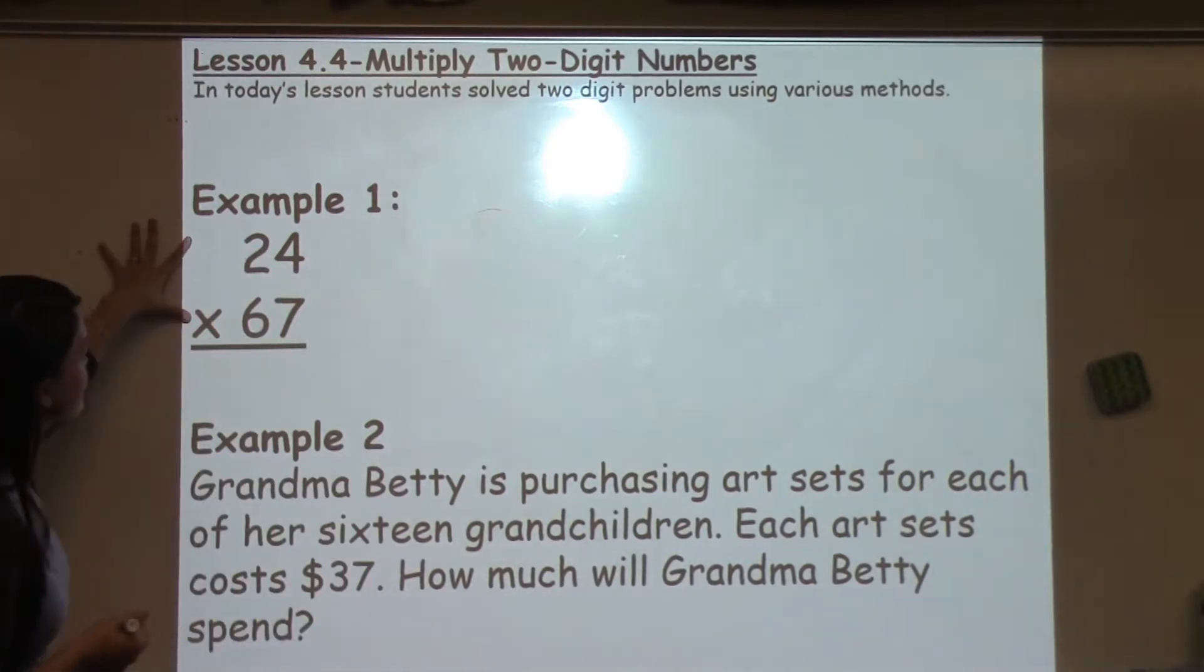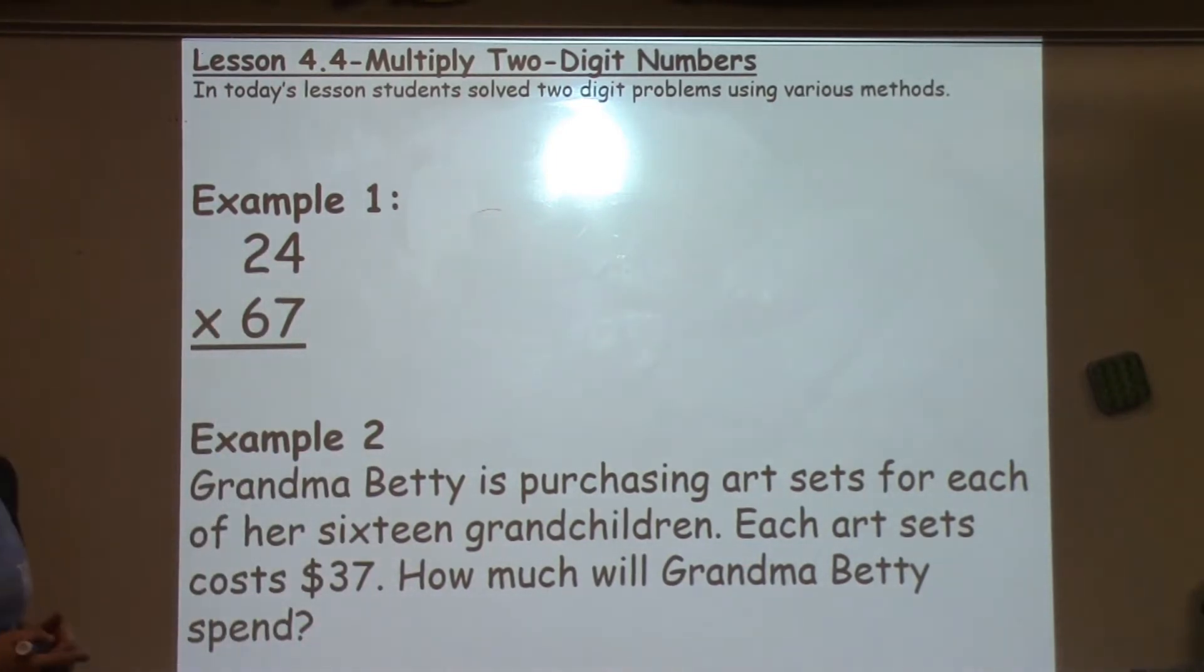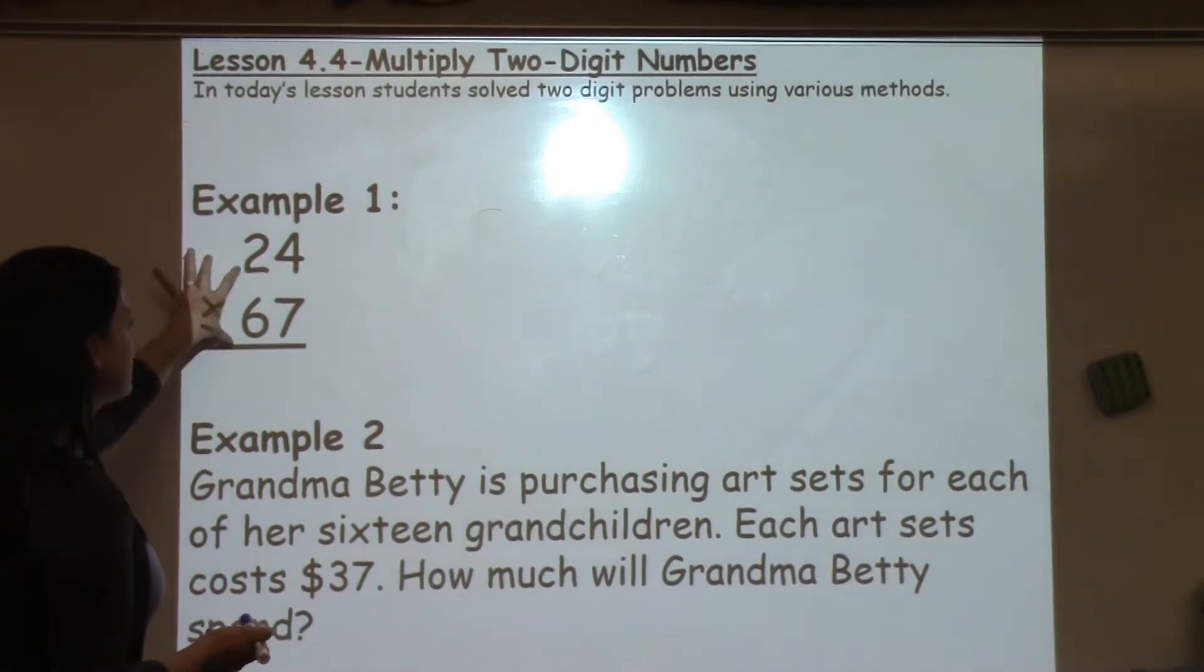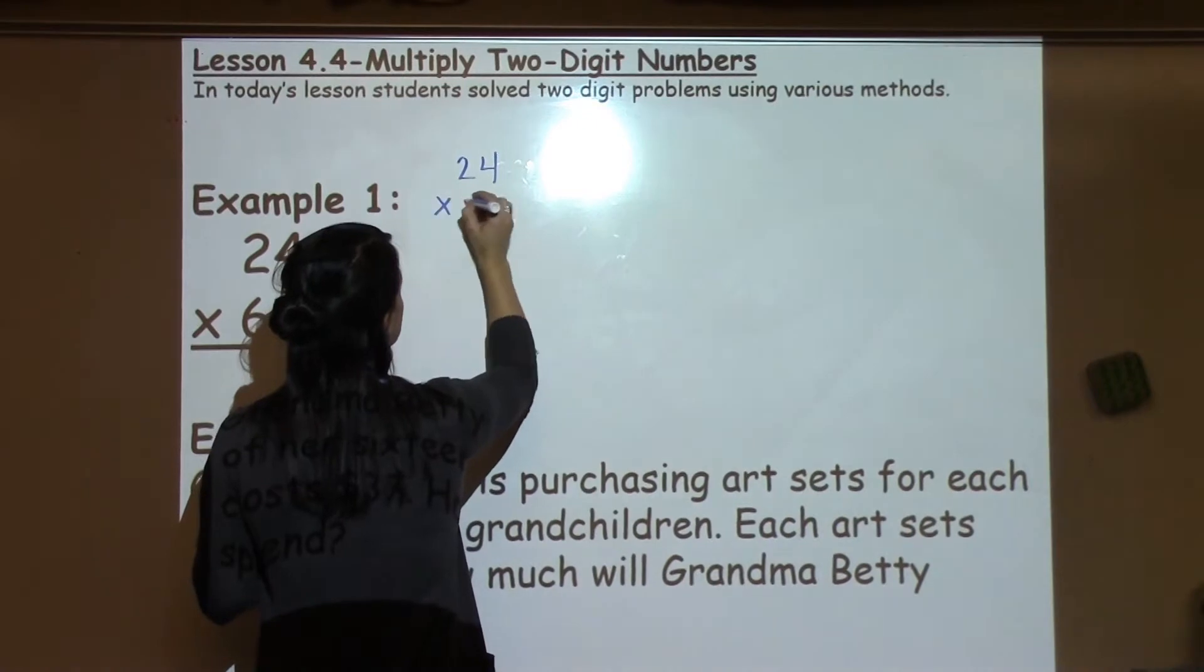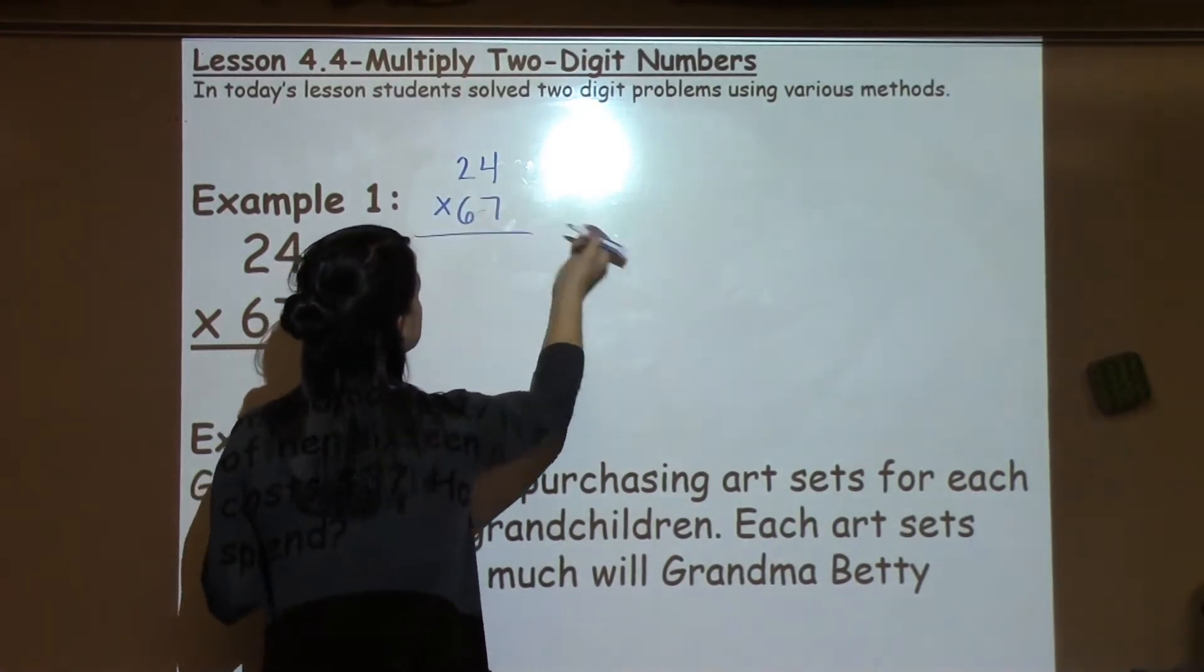Alright, let's look at the first example. It says 24 times 67. No word problem, just the plain problem itself. I'm going to go ahead and move it over here so I can work with it a little bit easier.